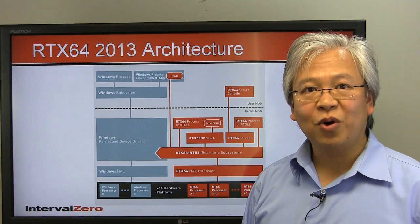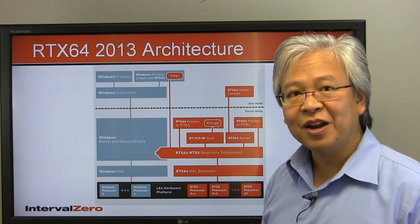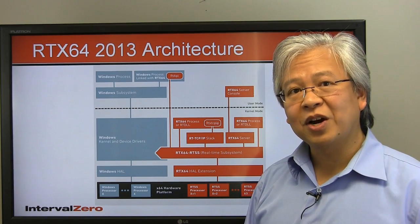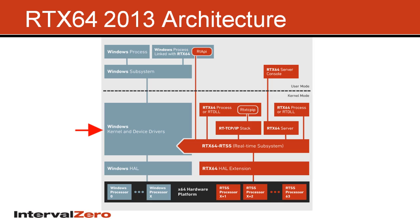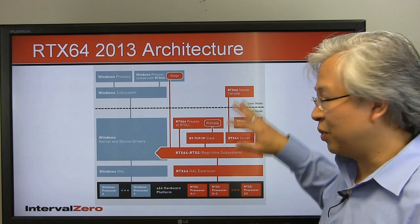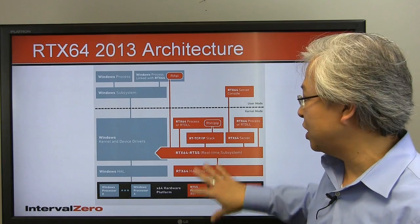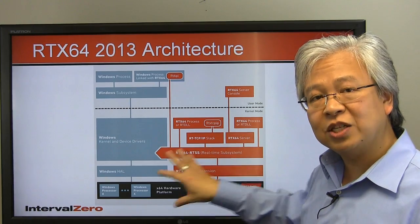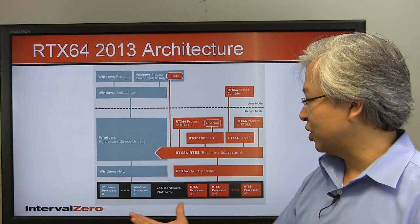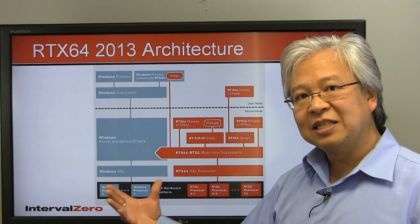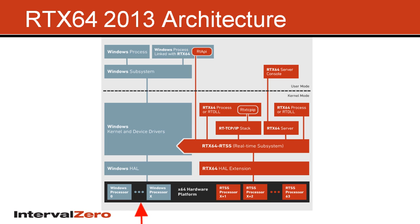Here we have an architectural overview of RTX 64 2013. For those of you already familiar with RTX, you'll see nothing has really changed other than we're supporting Windows 64-bit. For those of you who are new to RTX, to summarize: RTX transforms Windows into a real-time operating system on multi-core architectures. It does this by dedicating a set number of processors for Windows, and then a set number of processors for real-time processing on RTX.